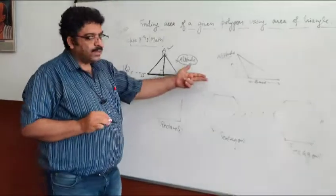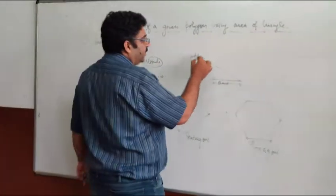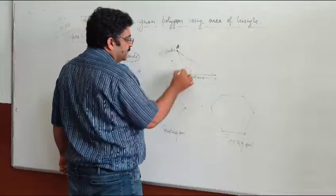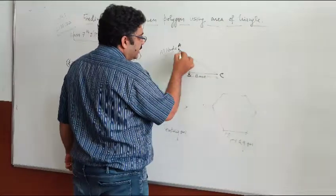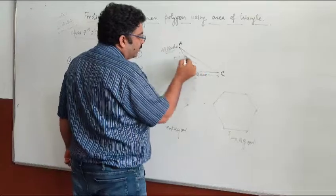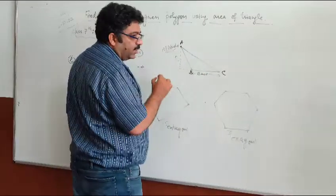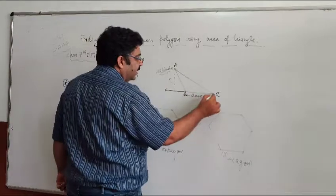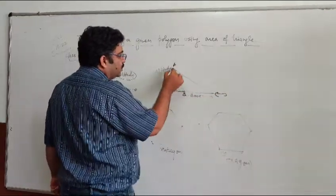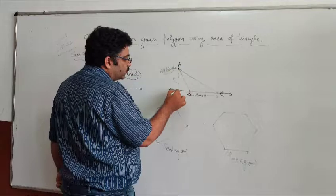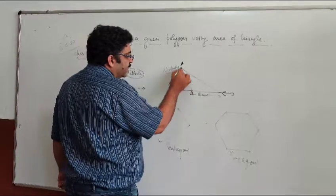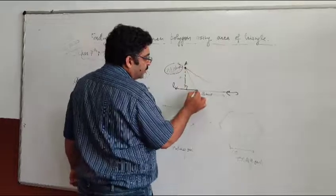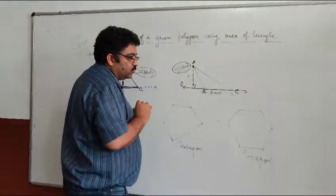Let us take another example. For this triangle, if you draw the perpendicular from vertex A to side BC, it will not fall inside because the angle is more than 90 degrees. So what we have to do is we have to extend this line and then draw the perpendicular from this point to the line. Let us say this is line L, then this line L will be the altitude to the base BC.